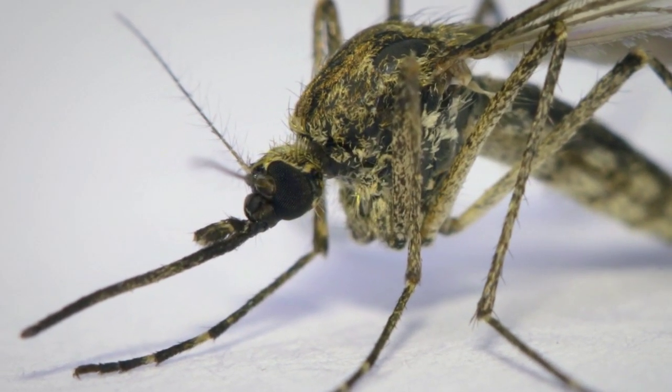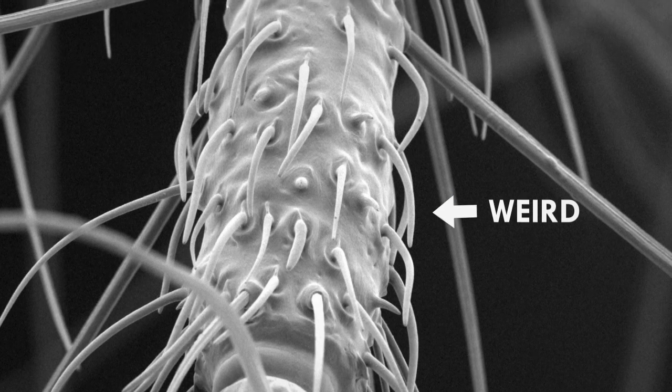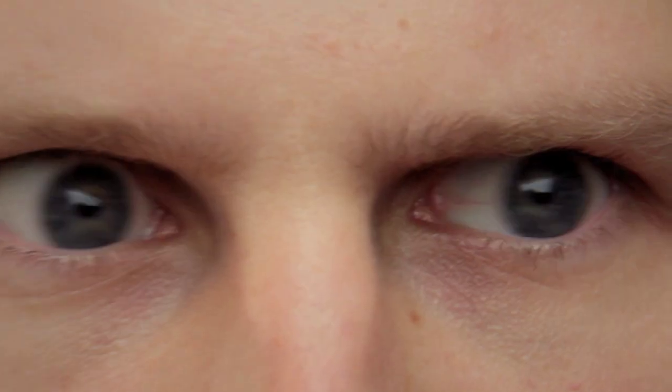Mosquitoes come equipped with an advanced set of chemical sensors, and on this strange antenna-like structure near their mouths there's over 70 types of odor receptors, many of which are dedicated to sniffing out a good human target.